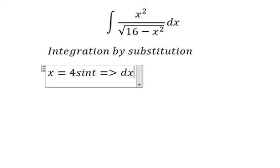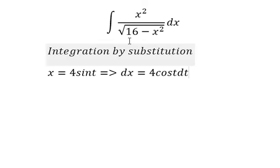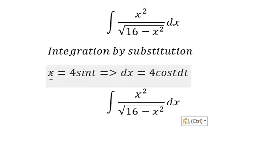And we have dx equals 4 cosine t dt. Now we need to change this integral. We have x, so we have x squared in here.